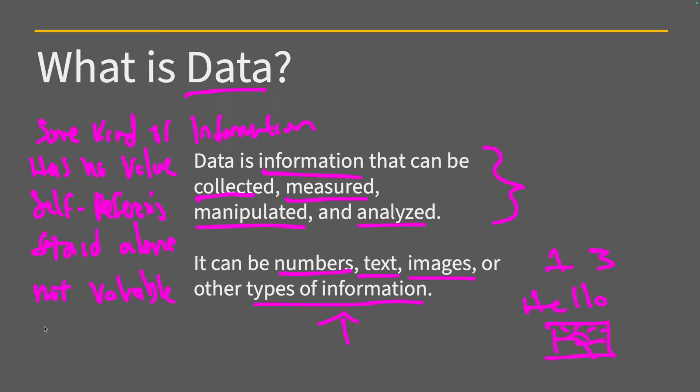But it is malleable, meaning that you can change it. But it lacks integrity. So these are some really important attributes of data. And this is what is data. So I think we're good to go to the next one.